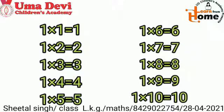Now you all will repeat after me: one ones are one, one twos are two, one threes are three, one fours are four, one fives are five, one sixes are six, one sevens are seven, one eights are eight, one nines are nine, one tens are ten. Very good! I hope you all have learned this table.